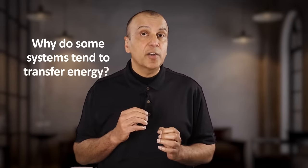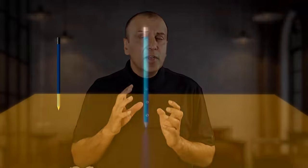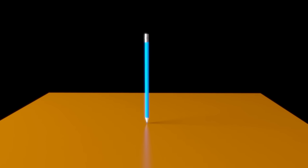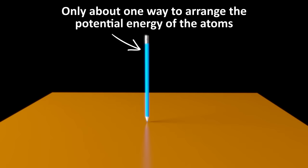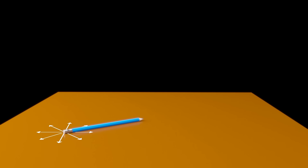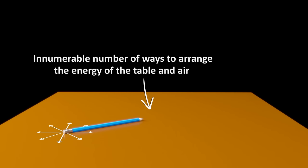The real question we want to answer is, why do some systems tend to transfer energy to other systems? To answer this question, let's go back to the example of the pencil standing on its tip. And let's consider the number of possible ways that the total energy can be divided up between the pencil and the environment. That is, the table and air. This is where probability comes in. When the pencil is standing up, there is pretty much just a single way you could arrange the potential energy of the atoms that comprise the pencil. And there are very few ways that you can put that energy towards kinetic energy of the pencil. Once the pencil has transferred this kinetic energy to the movement of atoms on the table and the air in the form of heat and sound, there is an innumerably large number of ways that you could divide up that energy among the atoms of the surrounding air and table.